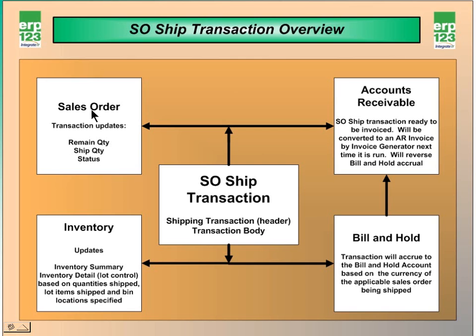The sales order is updated at the time of the shipping transaction. Its remaining quantity, all the line items, the ship quantities, and the status will be updated. In the case where a line item is shipped complete, the status will change to closed. In the case where the item has a backorder, the status will remain open.